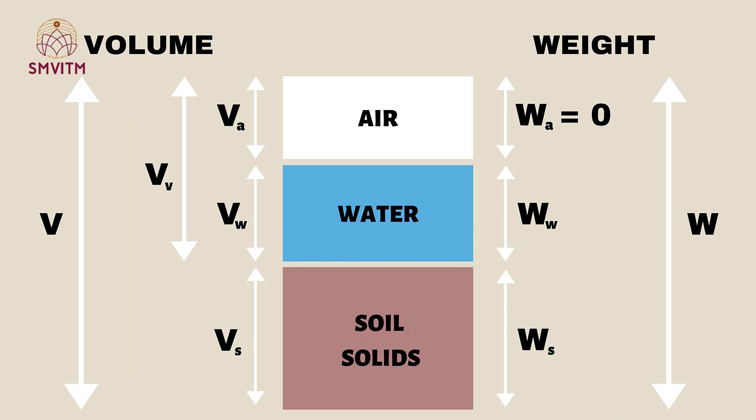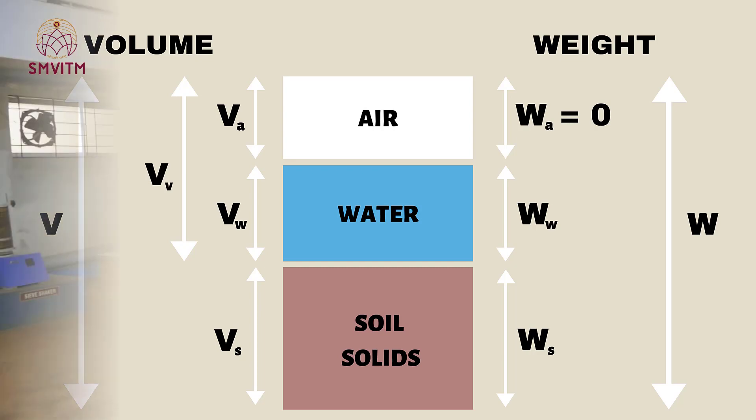Before starting the experiment we will learn about the three phase diagram of the soil. A soil mass consists of the solid particles and the voids in between them. The voids will be filled with air and water. The weight of the air can be neglected. In this experiment we are going to find the percentage of water in the soil mass.